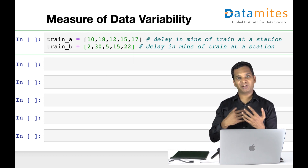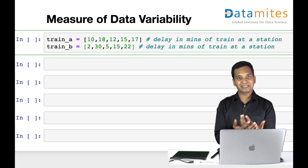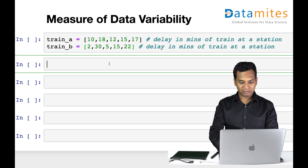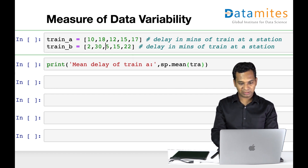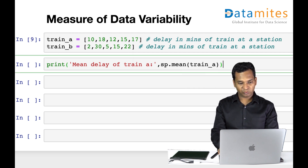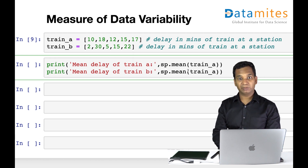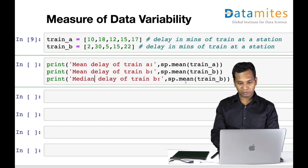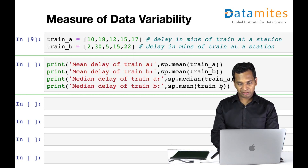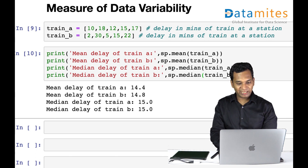Let's first try our measures of central tendency and see if we can compare these two delays and say which train is better. I'll print the mean delay of Train A using sp.mean, then do the same for Train B. I'll also print the medians for both trains.